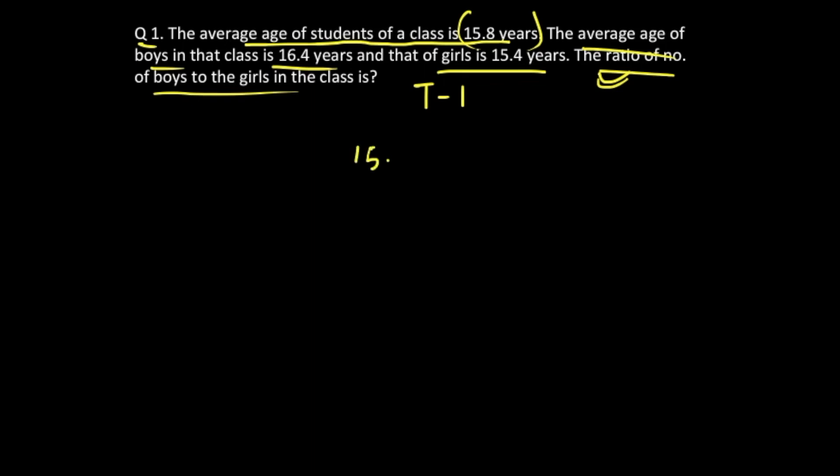We'll write the average age of girls, which is 15.4, since it is lesser on the left hand side, and that of boys, 16.4, which is more on the right hand side. The average age comes in between, that is 15.8.